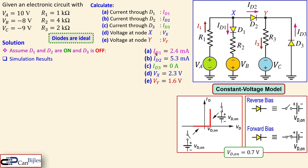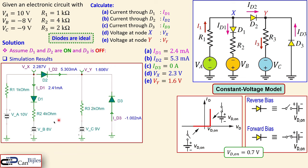Here is the summary of all results: ID1, ID2, ID3, VX, and VY. D3 is OFF so ID3 equals zero amps. We will verify these values in the simulator shortly. The simulation results show VA, VB, and VC — note they are inverted in the schematic since I needed minus 8 and minus 9 — along with diode current arrows and voltage nodes VX and VY.